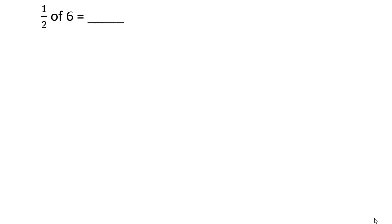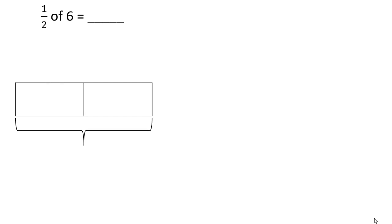Now let's try it here: 1 half of 6. So we're trying to find half of the number 6. We can start with a tape diagram. Notice that this is put into two parts because our denominator is 2. The entire tape diagram is worth 6 since that's the number we're trying to find a portion of. Now we need to think about what each part represents. There are two parts, and we need a number we can repeatedly add two times to equal 6. Another way to think of repeated addition is multiplication. We have two parts, so we're multiplying that something by 2. What can we multiply by 2 to get to 6? That would be 3.